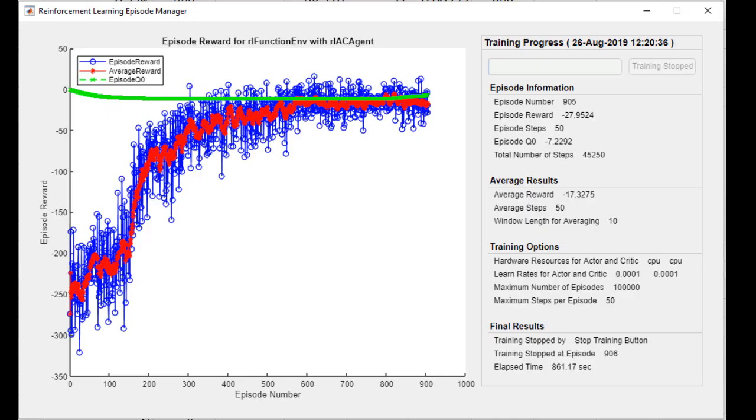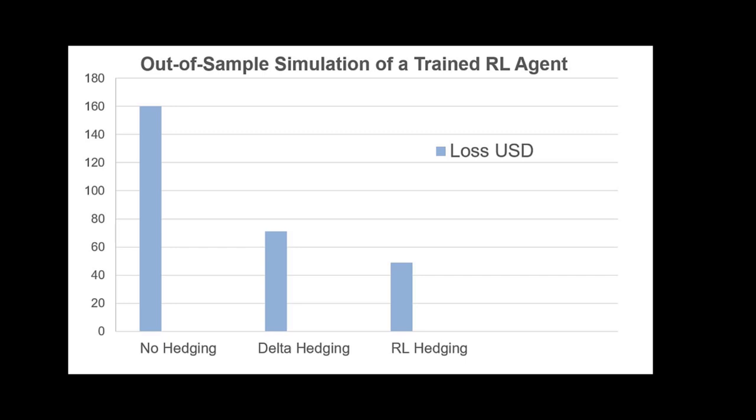We train the agent for an hour, and we can see that the agent has learned to maximize the cumulative reward over time. As a result, the trained agent outperformed a trader who used delta hedging and another who decided not to hedge at all.